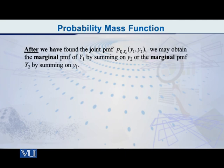And after we have found the joint PMF as I just explained to you, then we may obtain the marginal PMF of Y1 by summing over Y2 or the marginal PMF of Y2 by summing over Y1. So this is the concept of transformation in the case of the probability mass function of a random vector consisting of two random variables.